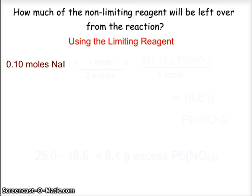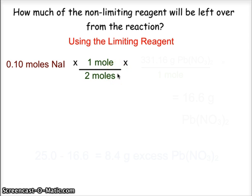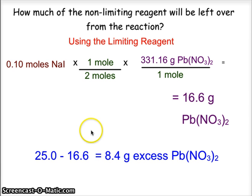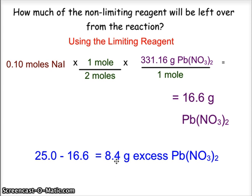Another type of question is how much of the excess will be left over, and we can do this in two ways. Using the limiting reagent: starting with 0.10 moles of sodium iodide, for every 2 moles of sodium iodide we use up 1 mole of lead nitrate, and using the gram formula mass of lead nitrate, we see we would use up 16.6 grams. Since we started with 25.0 grams and only use 16.6, we have 8.4 grams of excess.